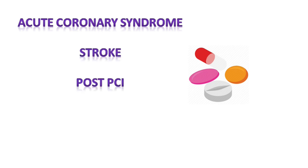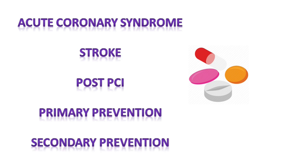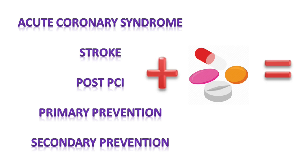Before we consider what to do in a patient taking antiplatelet drugs, we must think about why the patient is under these drugs. These drugs are prescribed in patients with acute coronary syndrome, stroke, post-PCI, and primary and secondary prevention of cardiovascular diseases. Learning about these diagnoses is important. The drugs and their effects are only part of the problem; another part is the inherent cardiovascular, cerebrovascular, or peripheral vascular diseases.